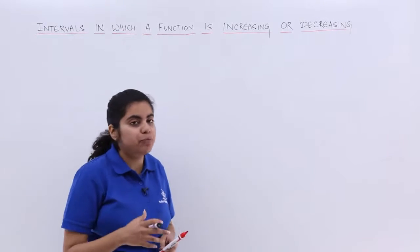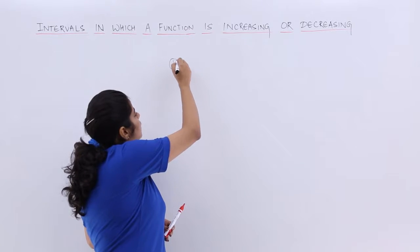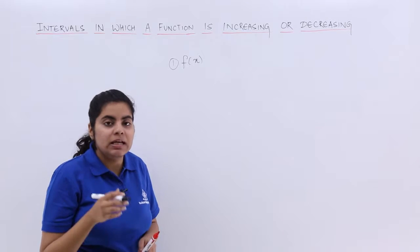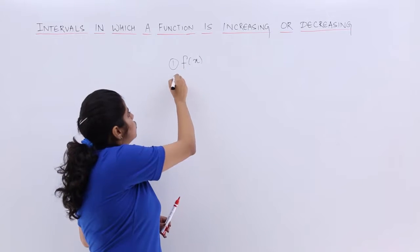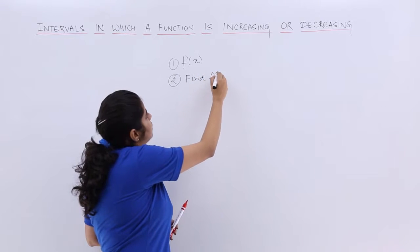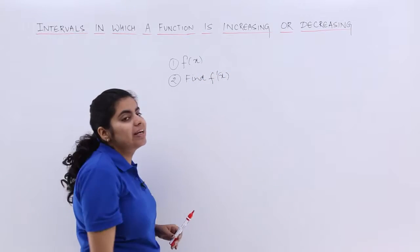So the procedure says that step 1 would be that whatever the function is given to you put it equal to f(x) or f of x. The second step tells me to actually find out the first derivative of this given function. That means find f'(x).